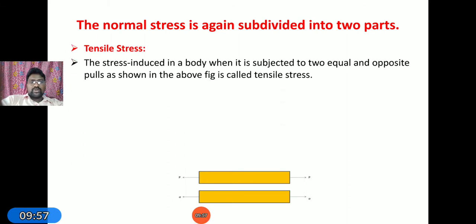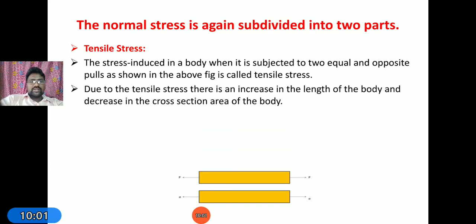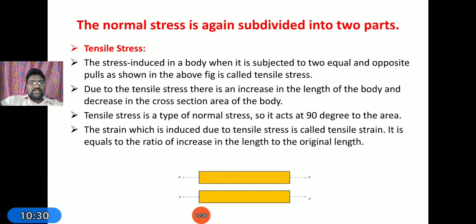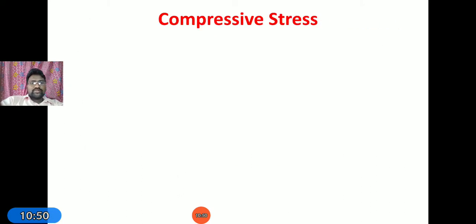Normal stress is divided into two types: tensile stress and compressive stress. Tensile stress is the stress induced in a body when it is subjected to two equal and opposite pulls, as shown in the figure. Due to these pulls the material gets elongated, and due to this elongation some internal stresses are developed — this is known as tensile stress. Tensile stress is a type of normal stress and acts at 90 degrees to the cross-sectional area. The strain induced due to tensile stress is called tensile strain, which equals increase in length divided by original length.